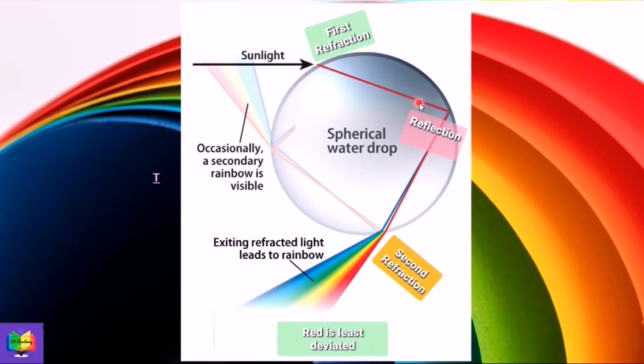Now again at this point, when this refracted light is incident at the back of the droplet after reflection, what will happen? This reflected ray will have seven colors. These are again incident at the surface of the water droplet at this point.